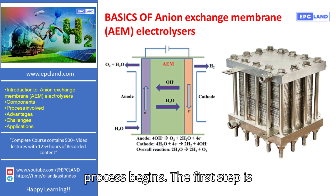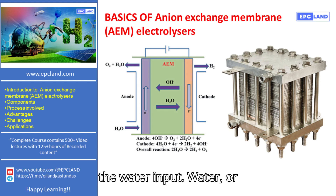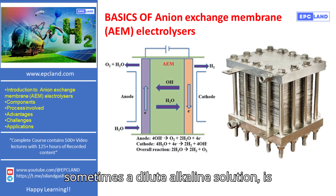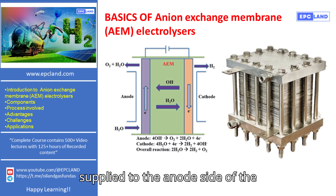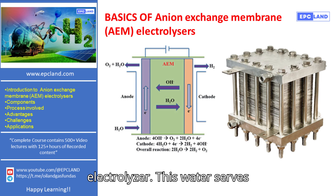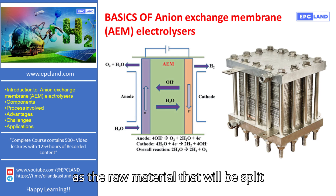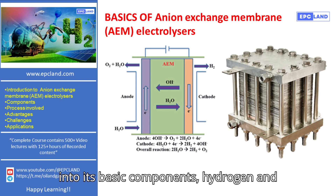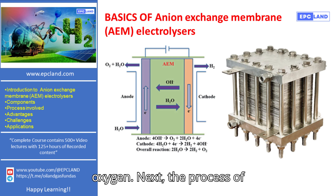The first step is the water input. Water, or sometimes a dilute alkaline solution, is supplied to the anode side of the electrolyzer. This water serves as the raw material that will be split into its basic components, hydrogen and oxygen.